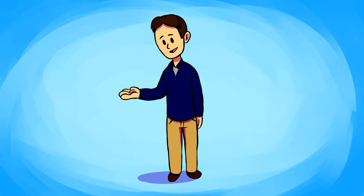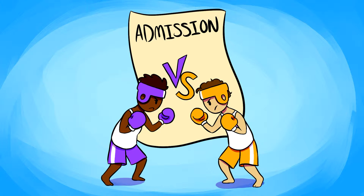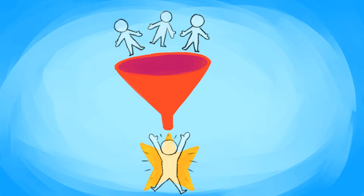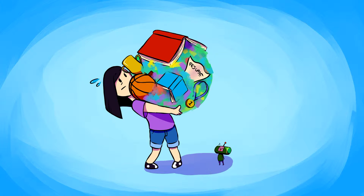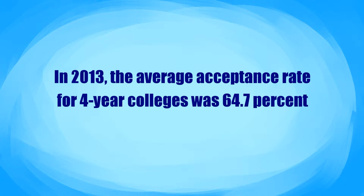As any student can tell you, college admissions are a competitive process. Most schools have minimum test scores and class standings to filter out the best of the best, but that's only the beginning. Extracurriculars, volunteer work, job experience, or even the specific classes a prospective student takes can make or break an application. In 2013, the average acceptance rate for four-year colleges was 64.7%, but many of the top schools are far more selective.